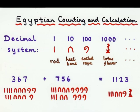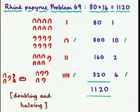A number is represented with the appropriate number of each symbol written from right to left. So, here are 367 and 756. You add them together by collecting the symbols together, and whenever you've got a group of 10, you just replace them by the next symbol. So, 10 rods gives a heel bone, and 10 coiled ropes gives a lotus flower.